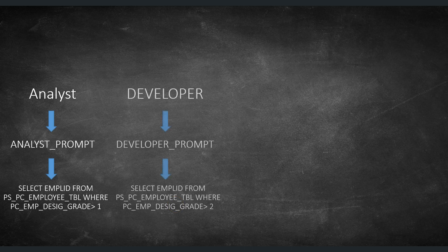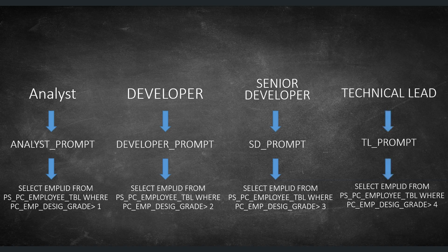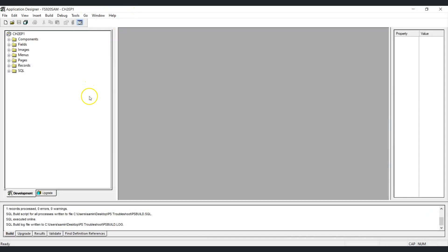Similarly, for other designations we create their respective prompt views and modify the designation grade in the SQL accordingly. So we will have multiple SQL views that can be used as a prompt table depending upon the designation of an employee. The question is: at runtime, how do we select the correct prompt table? We do that by writing PeopleCode using a derived record field called %editable.